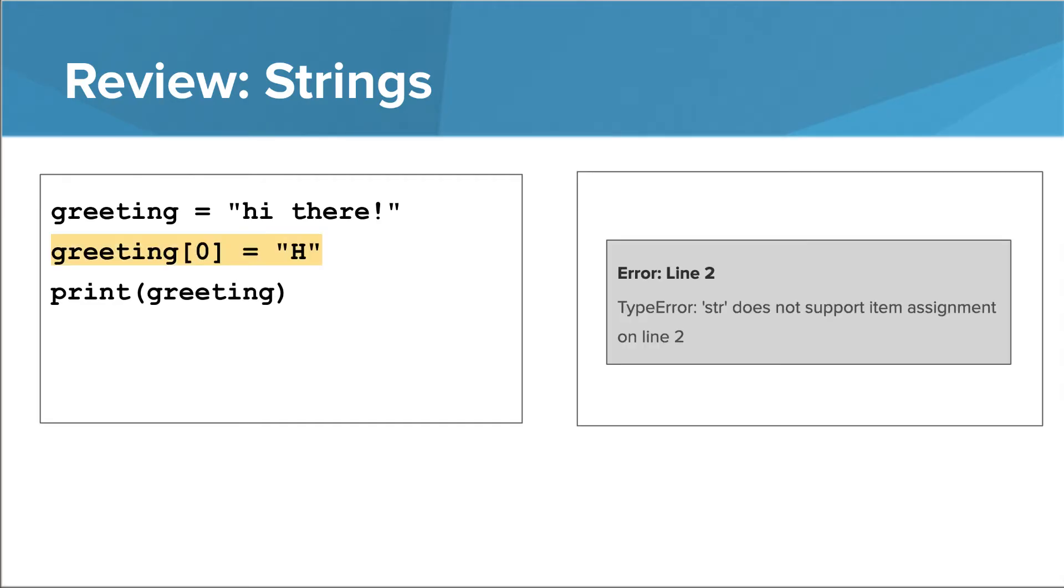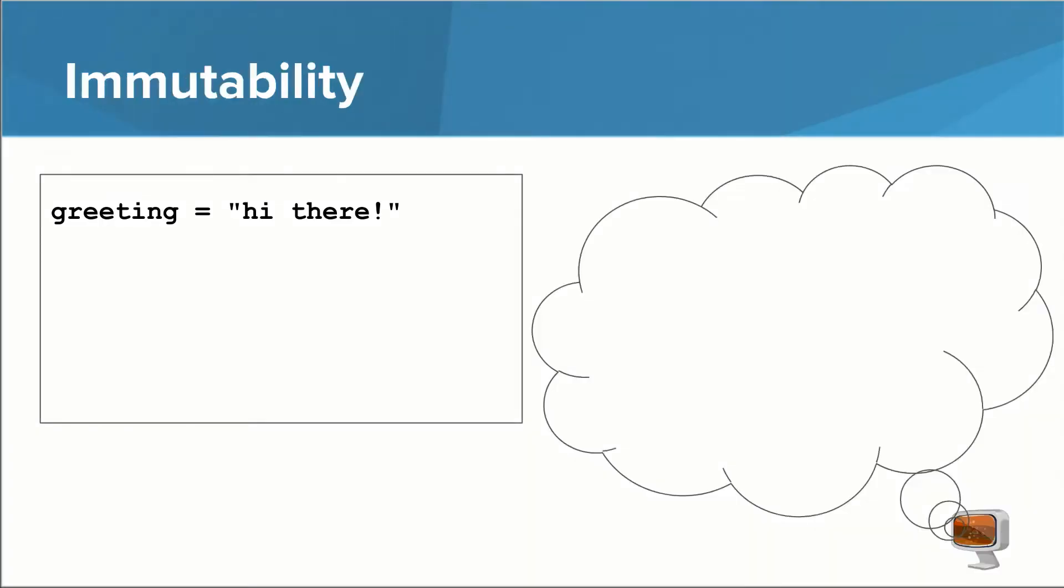You cannot, however, do this assignment in the opposite direction. In other words, you cannot take a string or a letter and assign it to a particular index in another string. In Python, strings have the property of immutability, which means they cannot be mutated or changed.